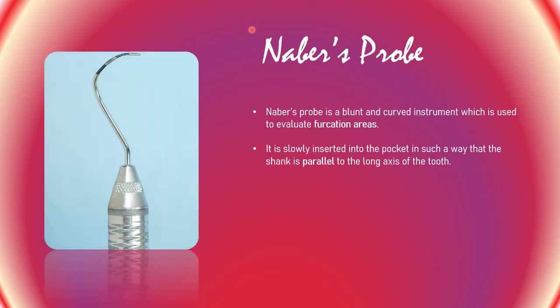The Nabers probe is a blunt and curved instrument used to evaluate furcation areas. It is slowly inserted into the pocket in such a way that the shank is parallel to the long axis of the tooth. This is the Nabers probe and it is used to evaluate furcation areas.